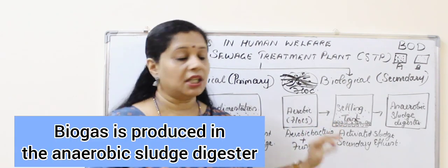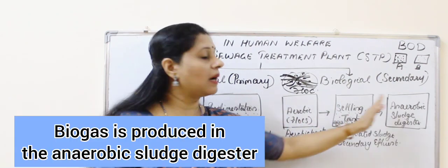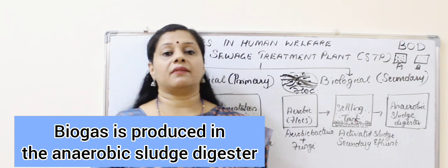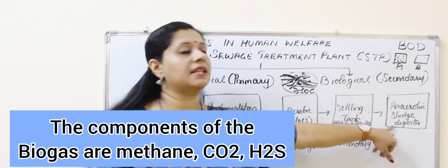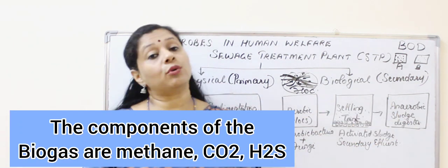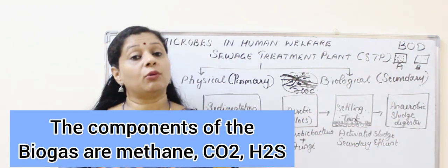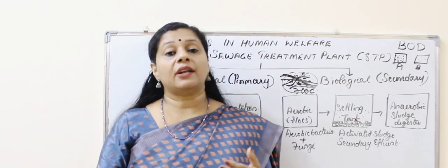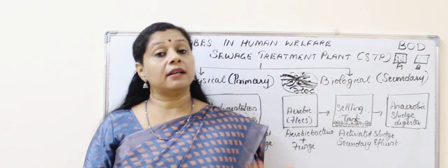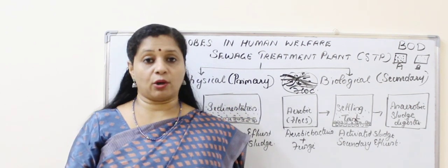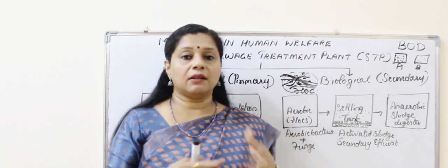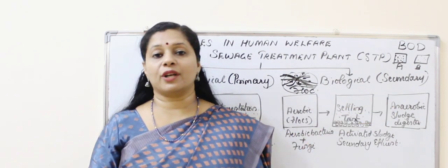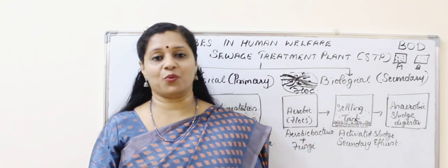In the anaerobic sludge digester, sludge is digested with the help of anaerobic bacteria. Anaerobic bacteria don't require oxygen, and usually decomposers are anaerobic. These decomposers will decompose the aerobic bacteria and the process is complete.